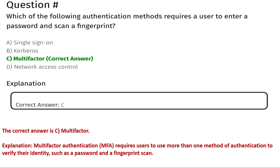The next question is: which of the following authentication methods requires a user to enter a password and scan a fingerprint? Option A: single sign-on, Option B: Kerberos, Option C: multi-factor, Option D: network access control. The correct answer is Option C, multi-factor.